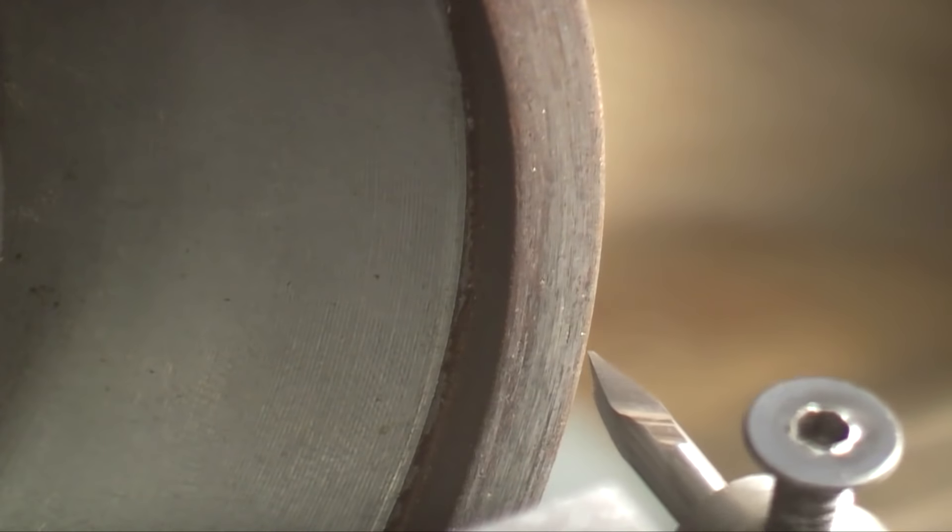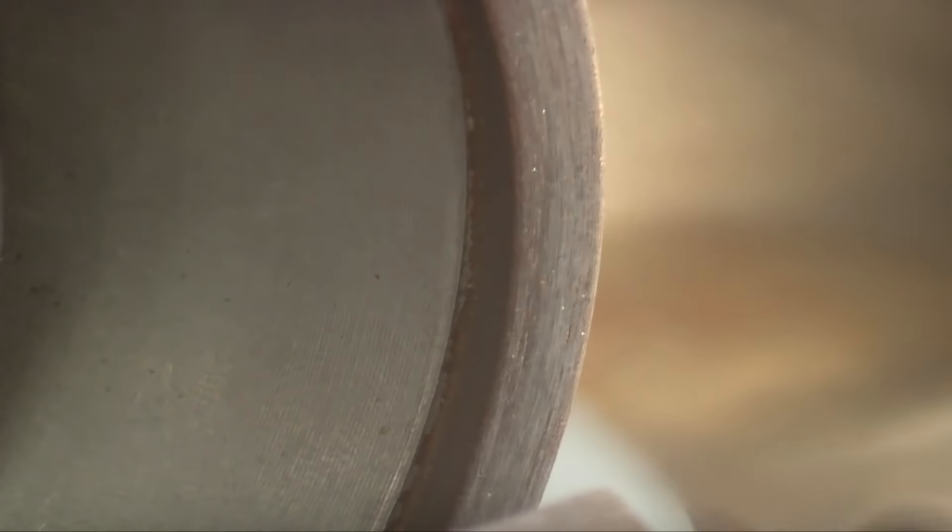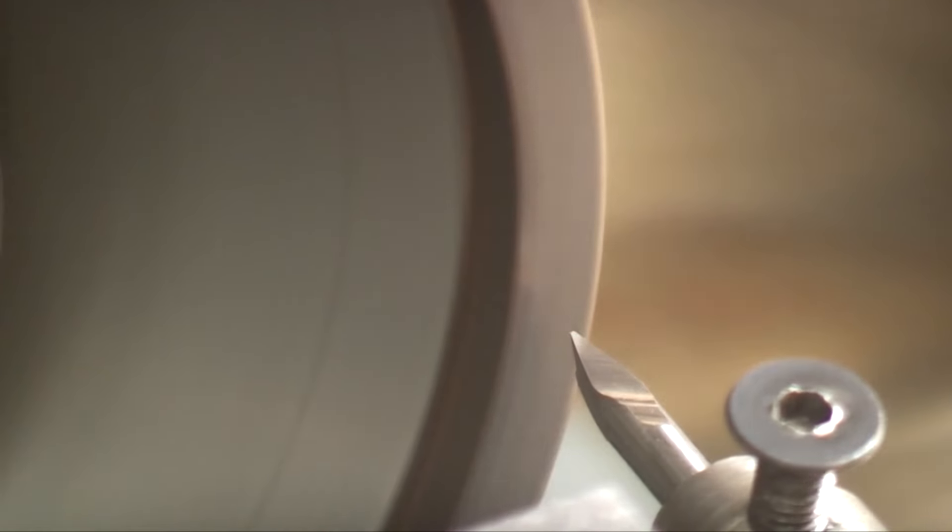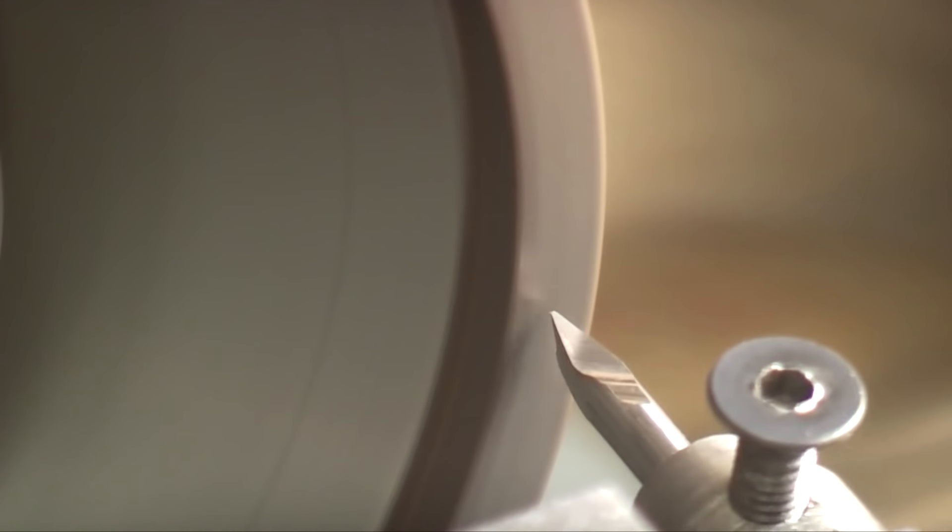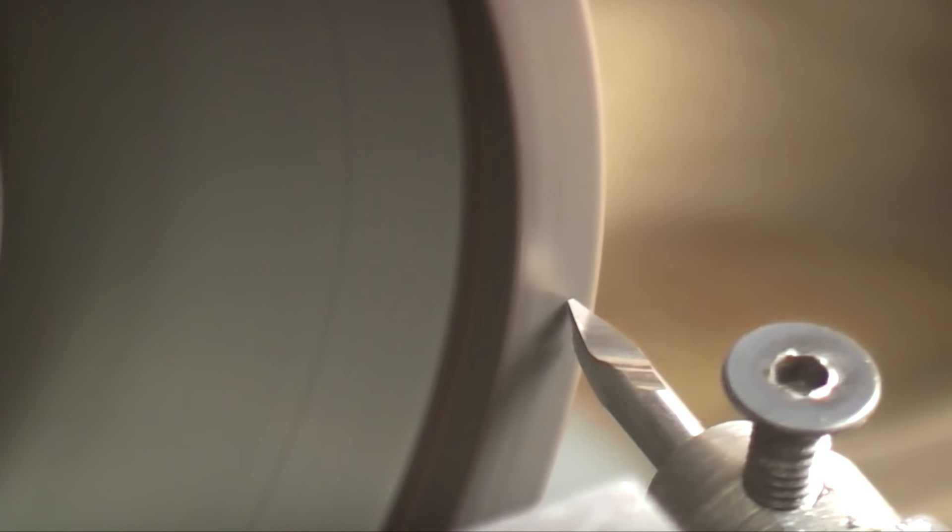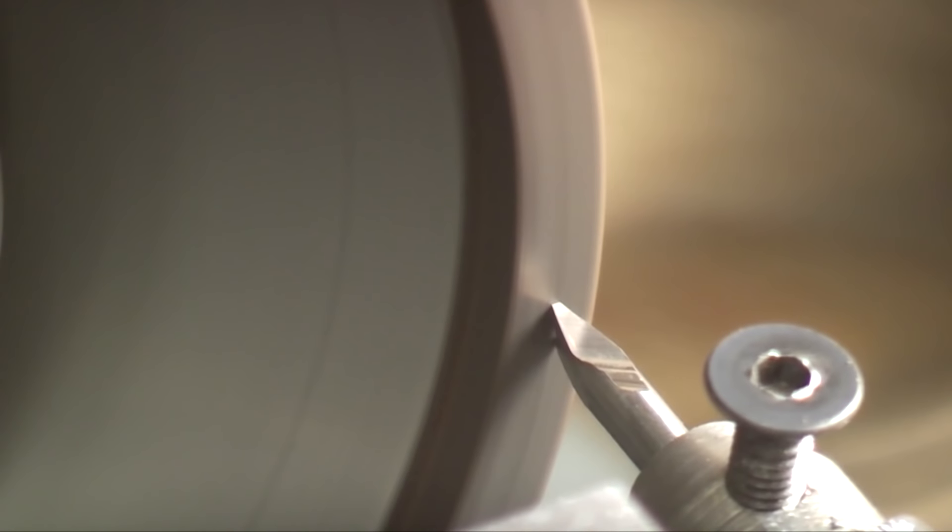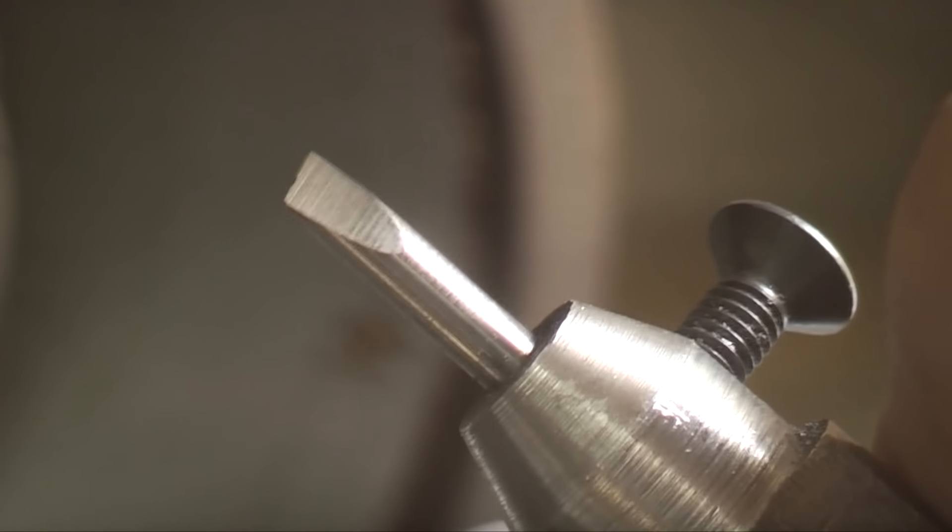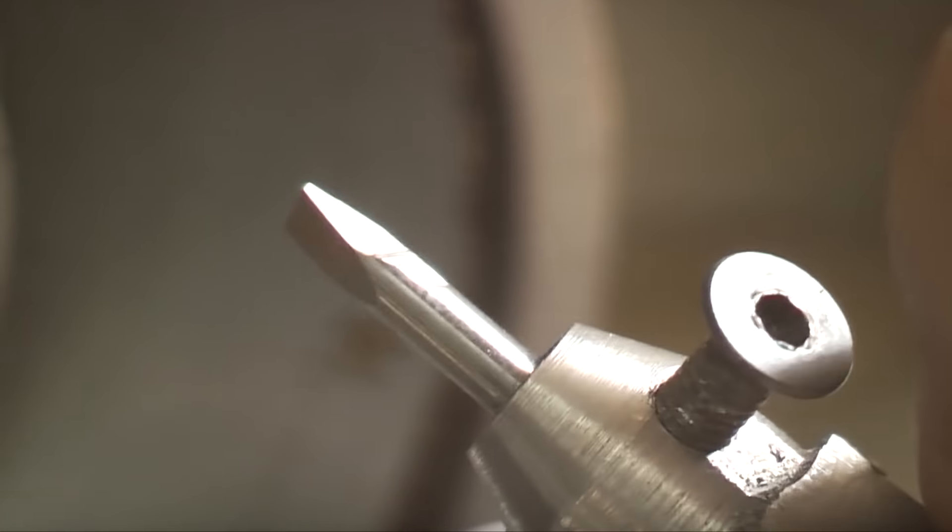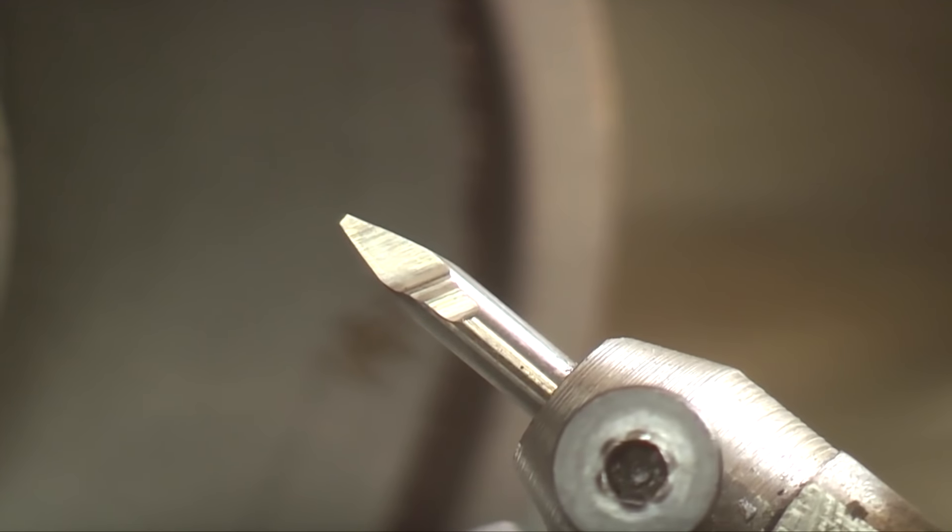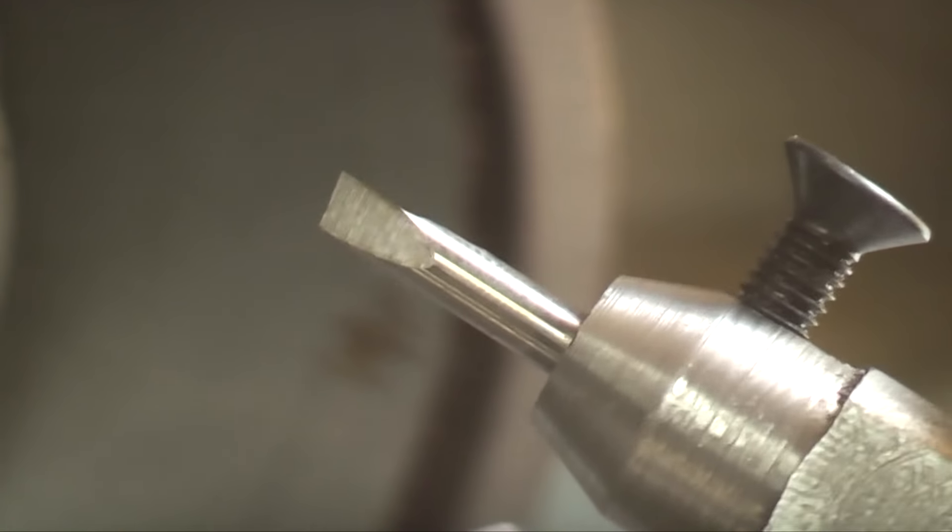Now I've put the tool square to the wheel but there is this 8 degree angle so it's going to cut an angle. So there you look on the top. See I've put a flat on the tip. That flat is just an angle.